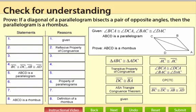Prove if a diagonal of a parallelogram bisects a pair of opposite angles, then the parallelogram is a rhombus. So we're given that this diagonal drawn, AC, bisects the pair of opposite angles.